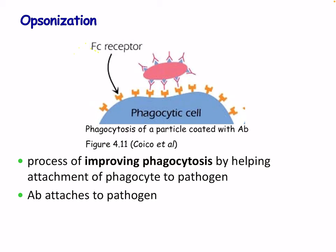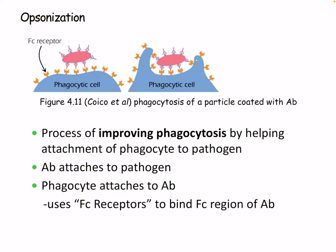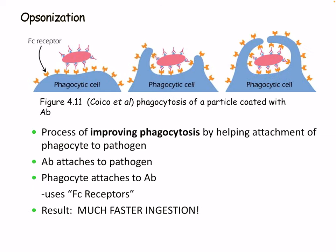Here's an example: the microbe is coated with antibody, which binds to the FC receptor on the phagocyte, causing strong binding so the cell can engulf the microbe. The phagocyte binds to the FC region of the antibody using its FC receptors, resulting in much faster ingestion because it can grip better and the target is easier to identify.